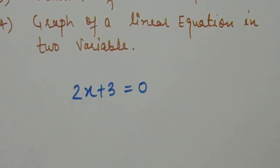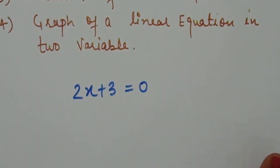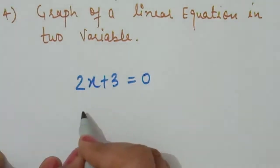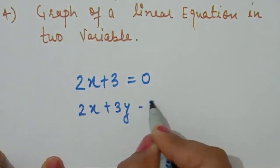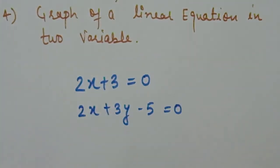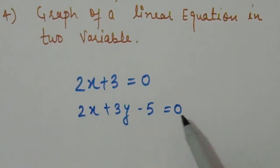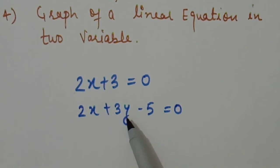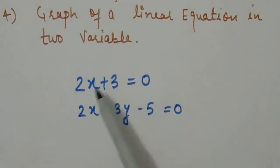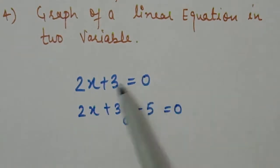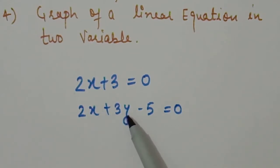You studied linear equations in one variable in your previous classes. Now we will switch to linear equations with two variables. If we introduce an equation where the highest power of the variable is one and it is equal to zero, that is a linear equation. This is a linear equation with two variables because x and y — two different variables — are present in it.